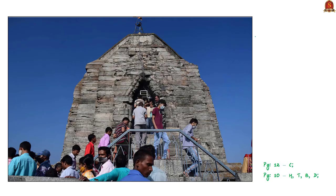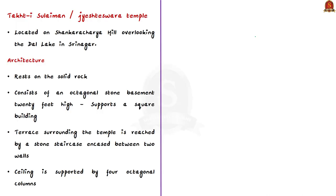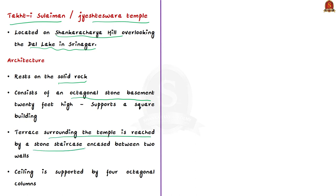Now let us take up this picture for our next discussion. It is a picture of a temple called Taktai Sulaiman, also called the Jyeshteshwara temple, located on Shankaracharya hills overlooking the Dal Lake in Srinagar. The temple rests on solid rock and consists of an octagonal stone basement 20 feet high, supporting a square building. The terrace surrounding the temple is reached by a stone staircase, and the ceiling is supported by four octagonal columns.